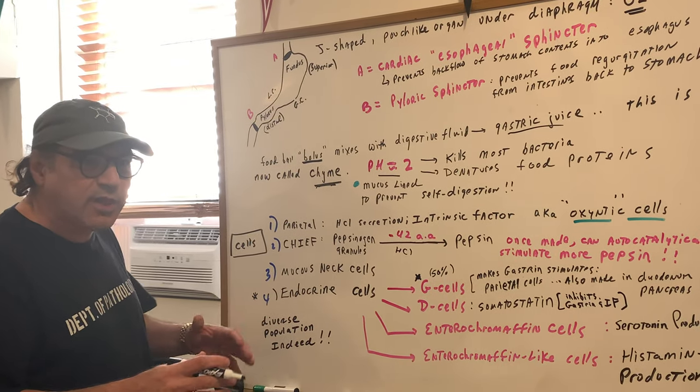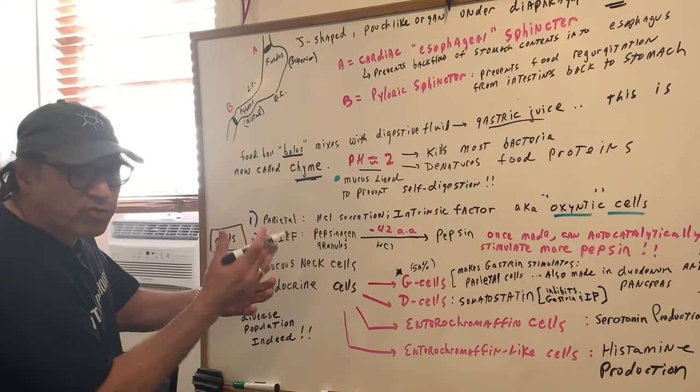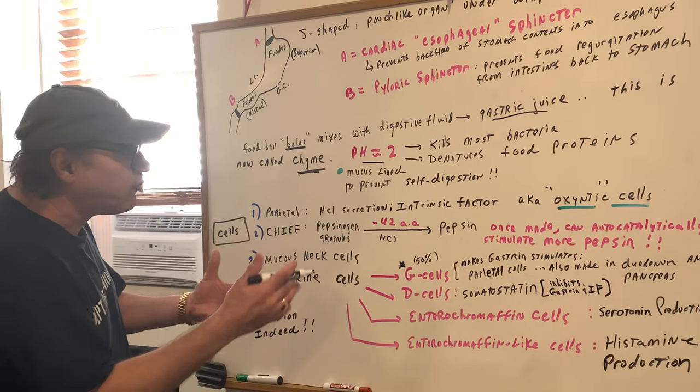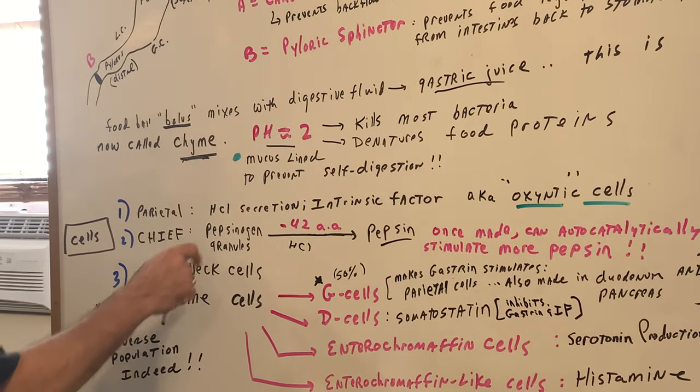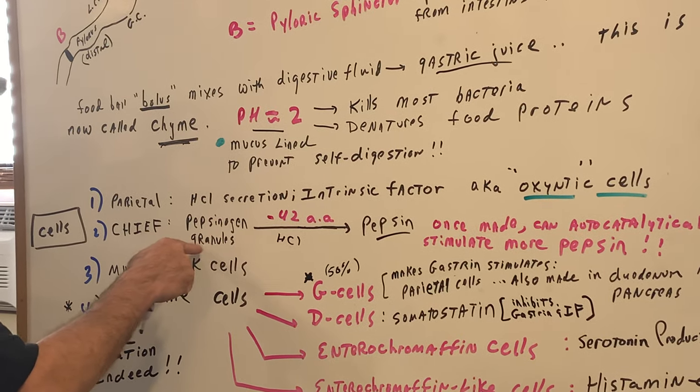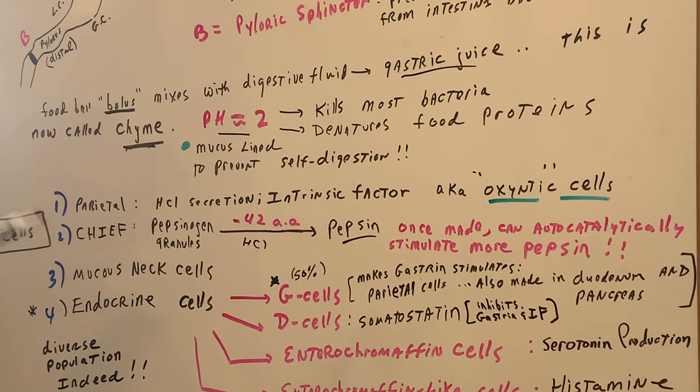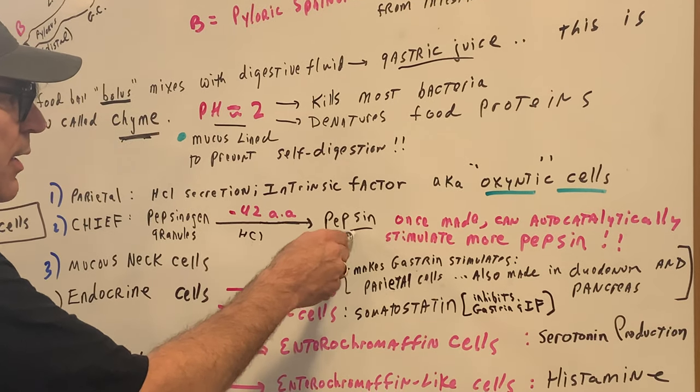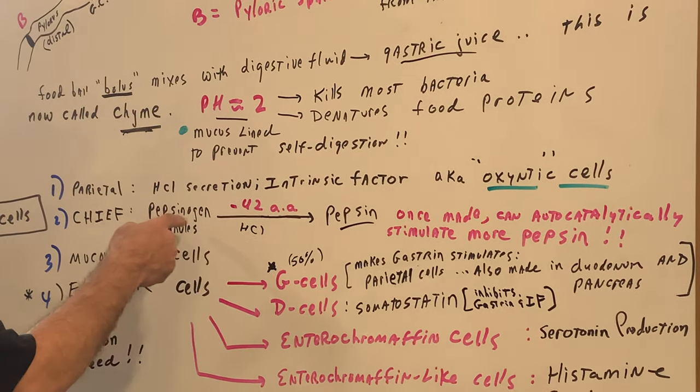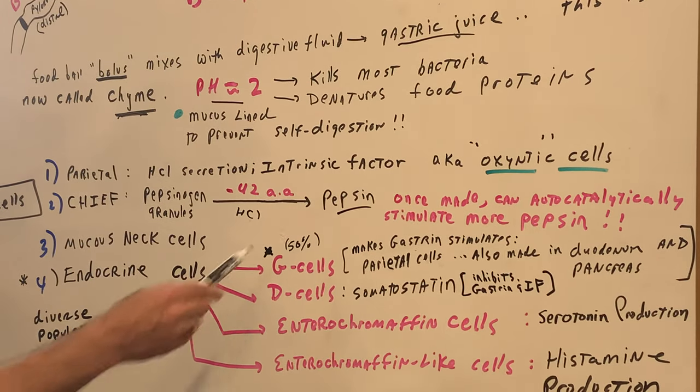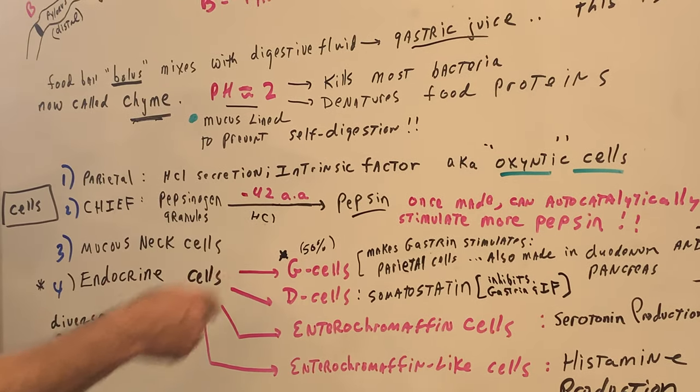This zymogen when HCL is present is going to cleave off 42 amino acids. I'm not asking you to memorize 42 but you get the idea. We're going to modify it and when we modify it we change the shape, and when we change the shape we expose the active site. So that forms pepsin. Pepsinogen located in these granules of the chief cells is converted into pepsin. Here's where it gets a little tricky: once it's made, that pepsin can autocatalytically stimulate more pepsin to be formed. So once you form pepsin it can come back and activate pepsinogen.